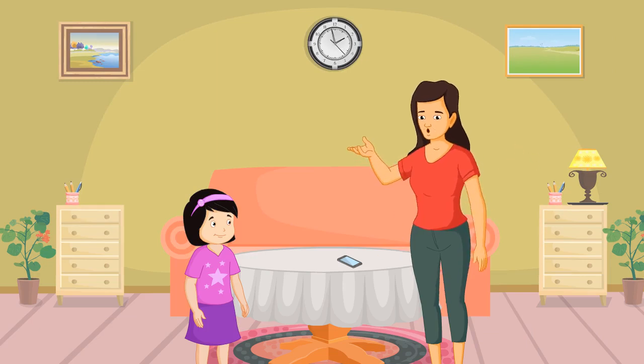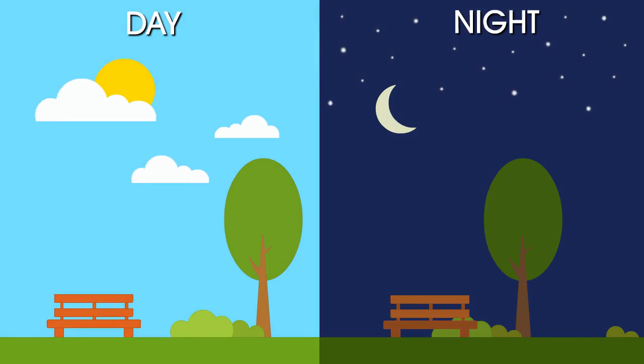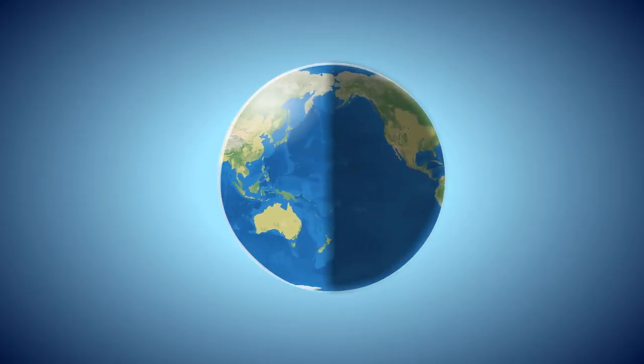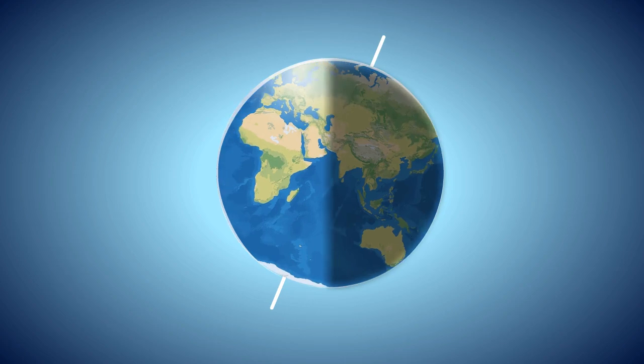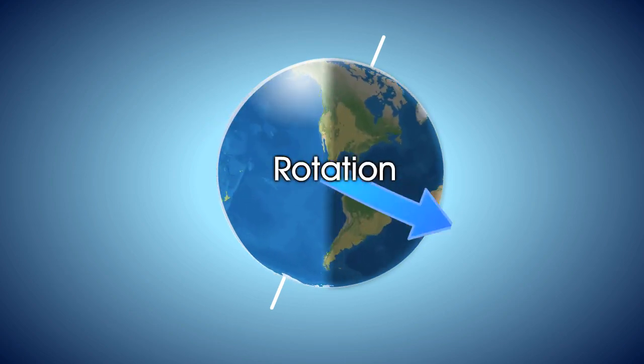Okay, I will explain. The day and night are caused due to the movement of the Earth on its axis. This movement is called rotation.